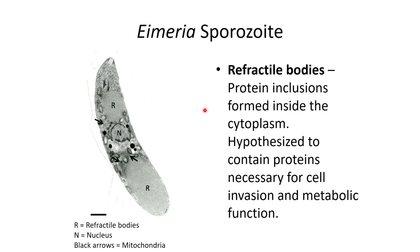Moving on to a more detailed image of the sporozoite: labeled R, they have something known as refractile bodies, which are protein inclusions inside the cytoplasm. Their exact function isn't known, but they're hypothesized to contain proteins necessary for cell invasion and metabolic function, helping the sporozoites survive. You can see the nucleus in the center, and the small black arrows point to the mitochondria. The sporozoites are motile organisms that invade the enterocytes of the small intestine.